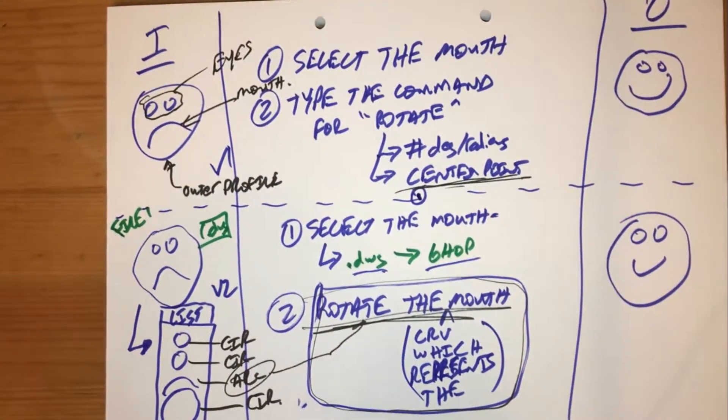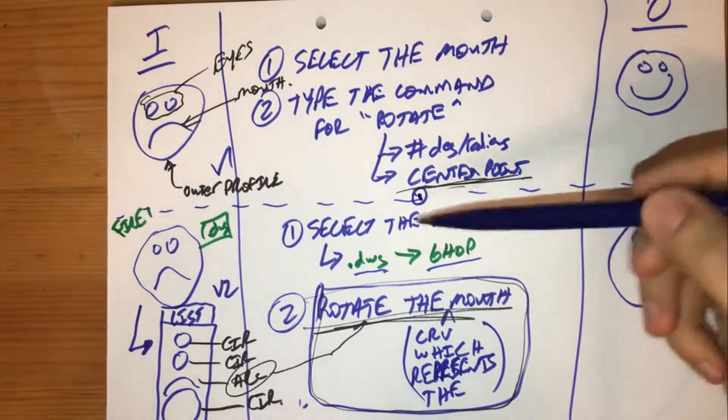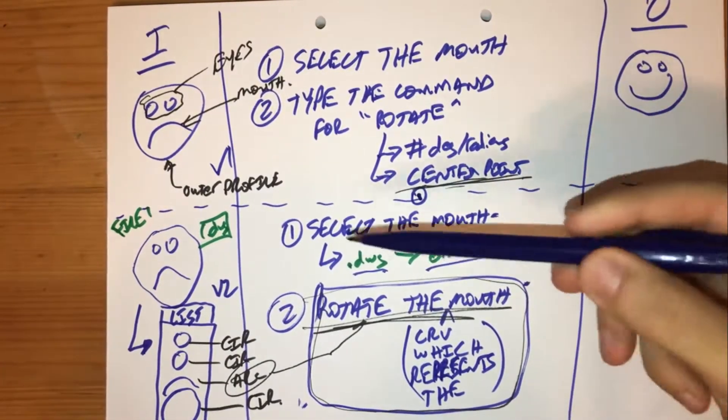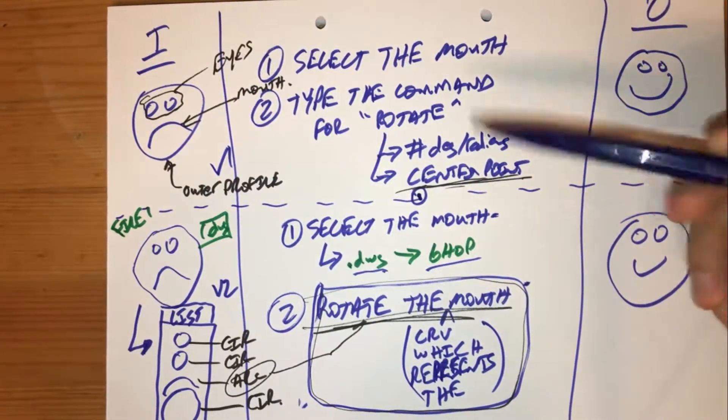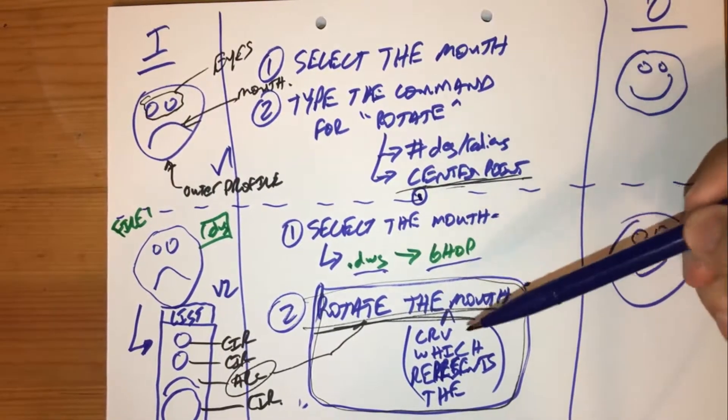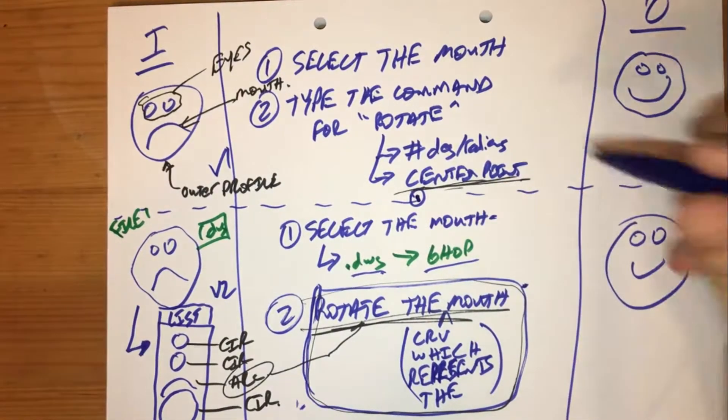In the previous video, we discussed that we need more clarity on this aspect of our algorithm - step two, rotating the mouth. Digitally, we're being forced into a situation where we have to recognize very specifically how this is actually going to work.